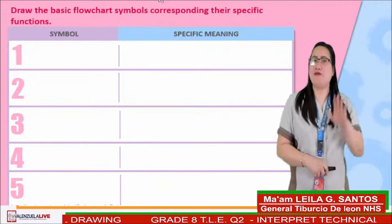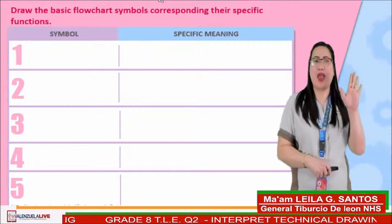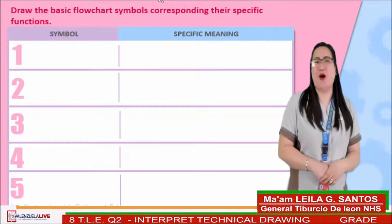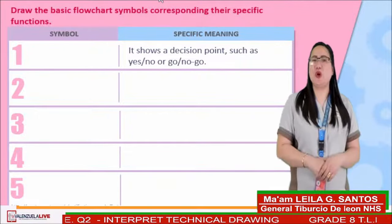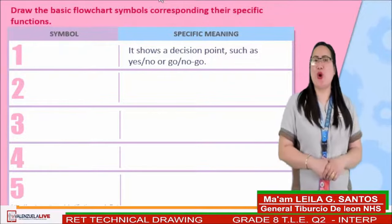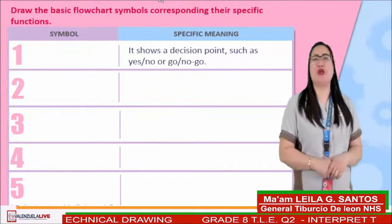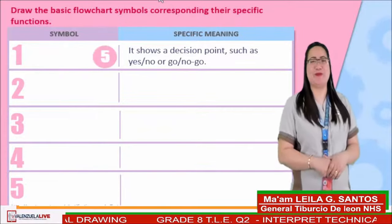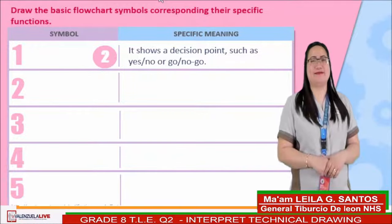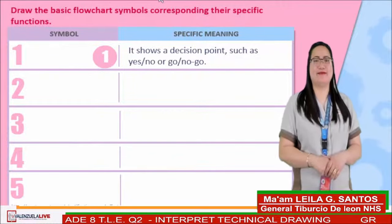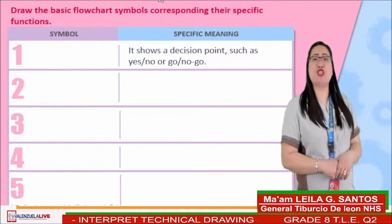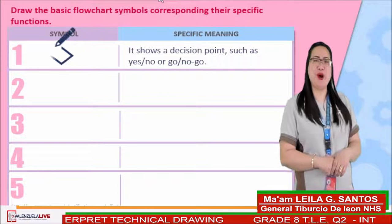You have only 5 seconds to draw a symbol in every number. Let's start with item number 1: It shows a decision point such as yes or no, or go/no go. Time's up! If you drew a diamond symbol — very good! That is correct!